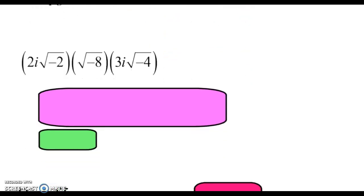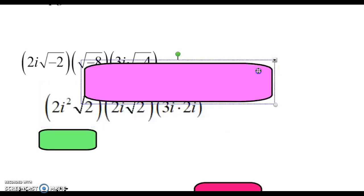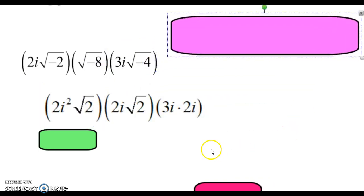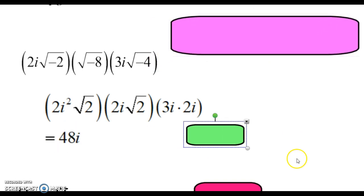When you are working with negatives underneath the radical, you have to simplify each one of them. You cannot multiply with the negatives underneath. So simplify each radical. Gives you this. And then we can multiply all of that. We get 48i.